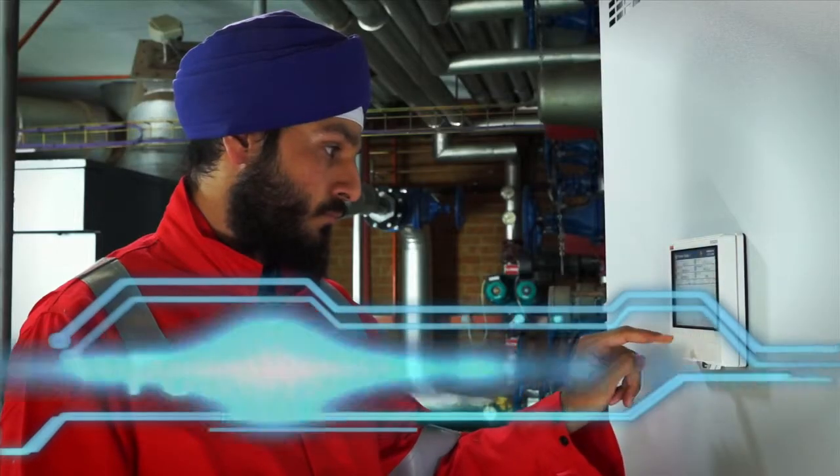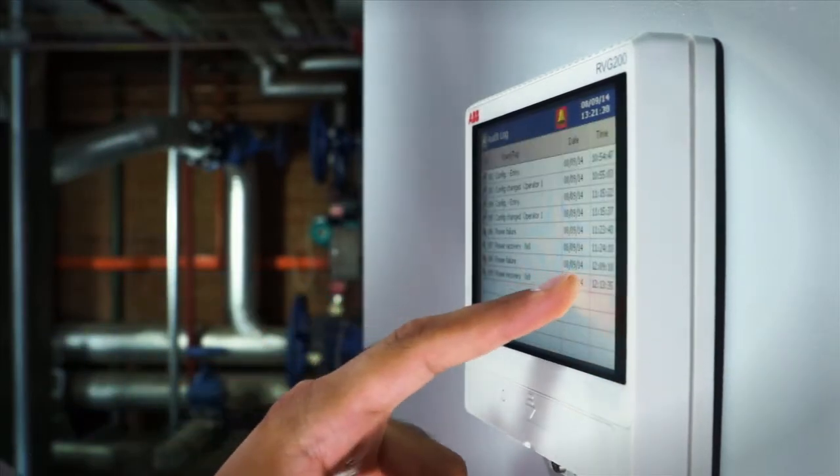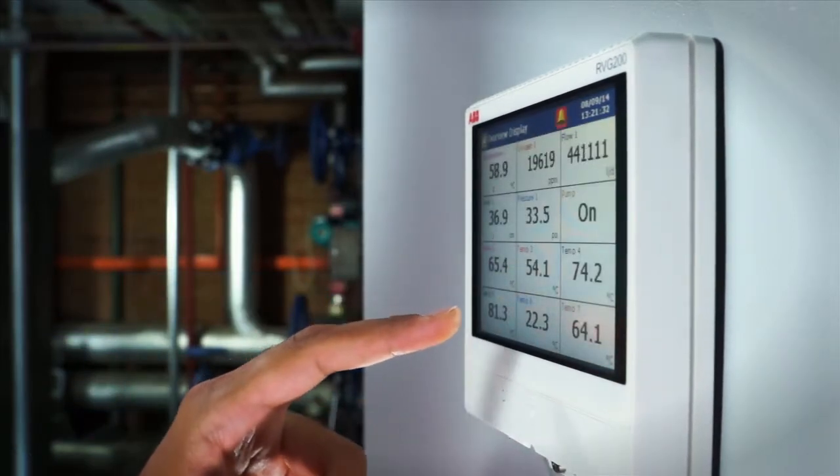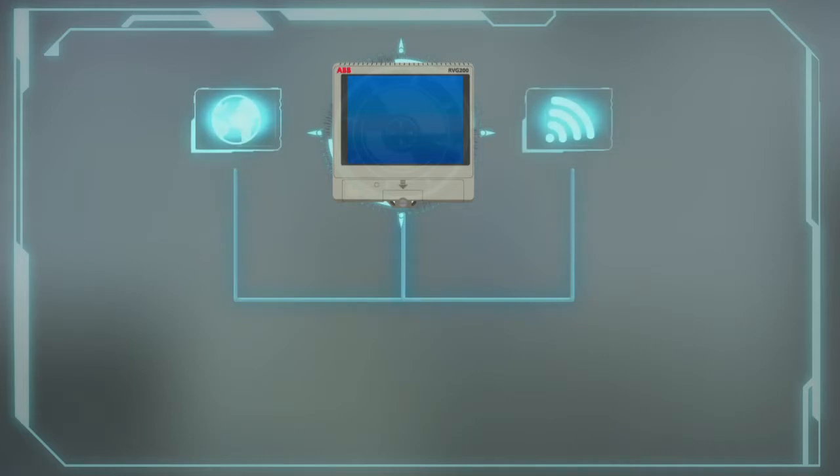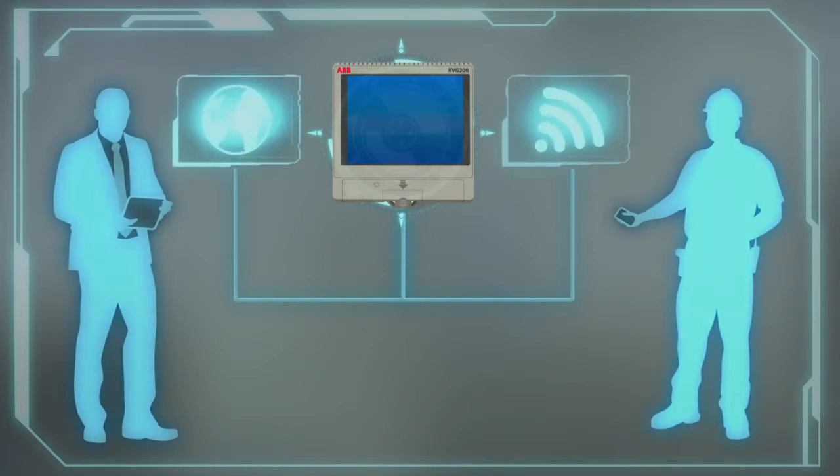The RVG200 offers powerful integration possibilities. The inclusion of a 100 megabit Ethernet connection gives you remote access to a range of features and functions. Simply plug the RVG200 into your plant network and see it transform from a standalone recorder into a fully automated data recording system.